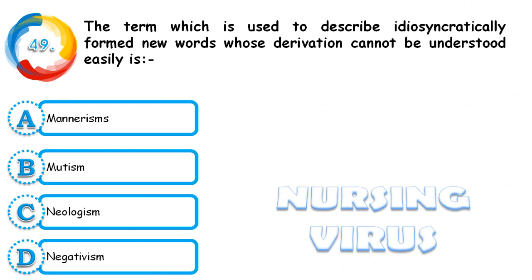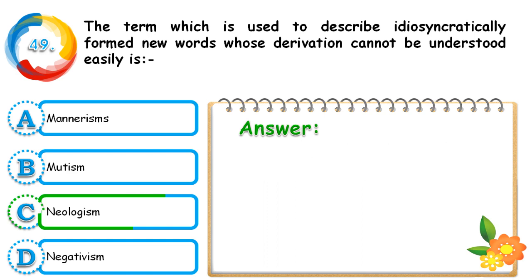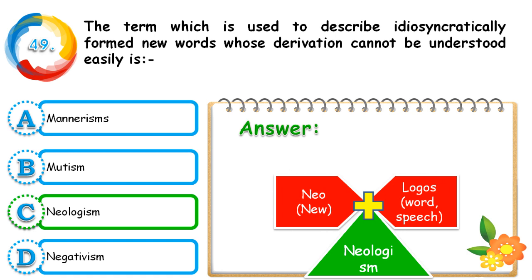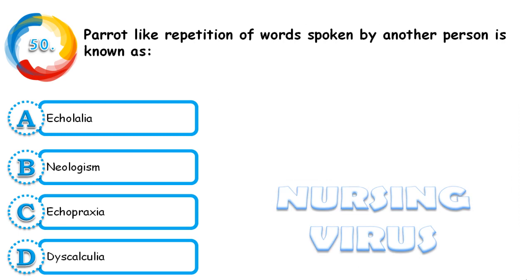Question 49: The term used to describe idiosyncratically formed new words whose derivation cannot be easily understood is mannerism, mutism, neologism, or negativism. The correct answer is neologism, where the person coins new words and assigns special meanings to them that only they understand.